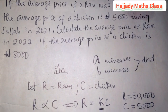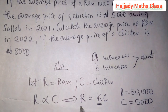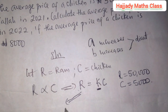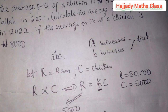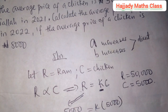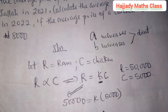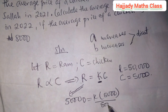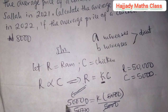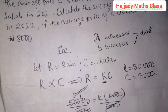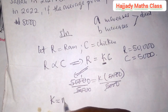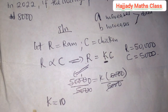Let's calculate the constant. Using the formula R = KC and substituting: 50,000 equals K multiplied by 5,000. Dividing both sides by 5,000 — the coefficient of K — we get 50,000 over 5,000. So our K, which is the proportionality constant, is 10.